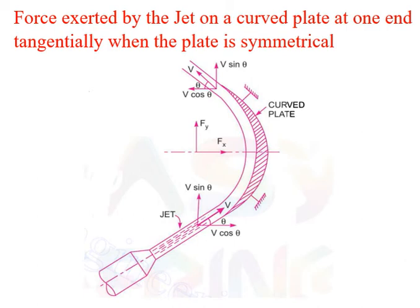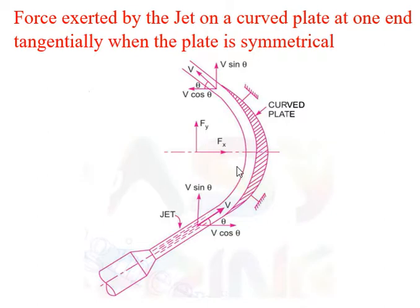Welcome to all. Today we will discuss the force exerted by a jet on a curved plate at one end tangentially when the plate is symmetrical. The jet strikes the curved plate at one end tangentially as shown in figure. If the curved plate is symmetrical about the x-axis, then the angle made by the tangent at the two ends of the plate will be the same.